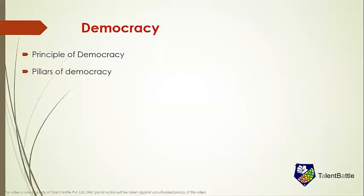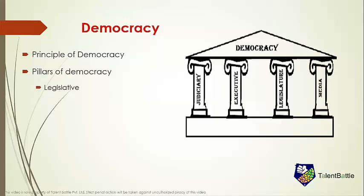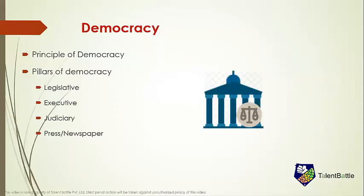Now let's talk about the pillars of democracy. Democracy is built with four pillars: the legislative, the executive, the judiciary, and the press or newspaper. The legislative pillar is responsible for making the laws that will govern a state. These laws are either formed directly by the people — that is direct democracy — or through representatives elected by the people, that is indirect democracy.